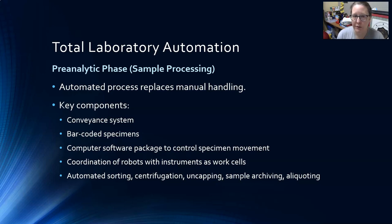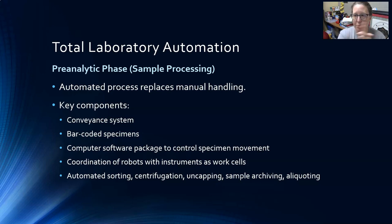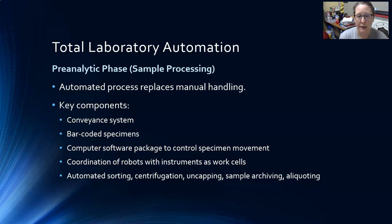Let's talk briefly about total lab automation, which is a trend especially in large reference labs or really large hospitals. Automation has long been in place for the analysis phase, but we've increasingly tried to automate the pre-analytical and post-analytical phases. The pre-analytical phase automation deals with sample processing — while humans still need to collect specimens, once they come into the lab, they can be loaded into an automated processor that replaces all the manual handling from central processing.